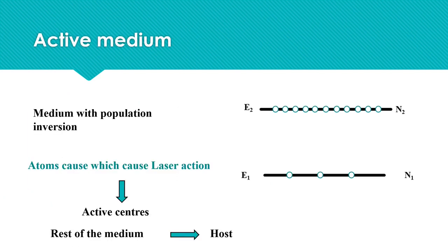A medium with population inversion is known as active medium. Here, there will be more atoms or molecules in higher energy level and less number in lower energy level.